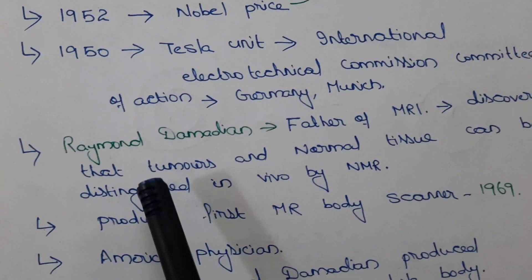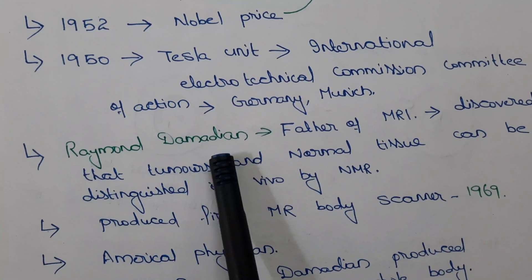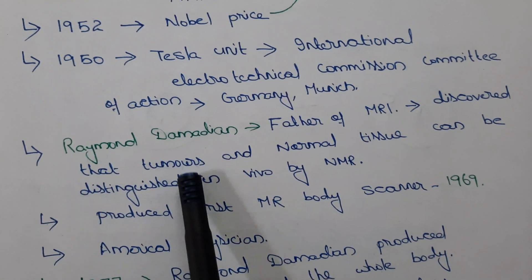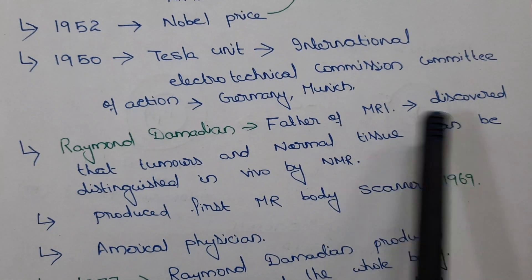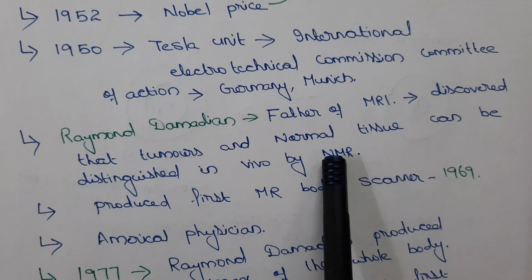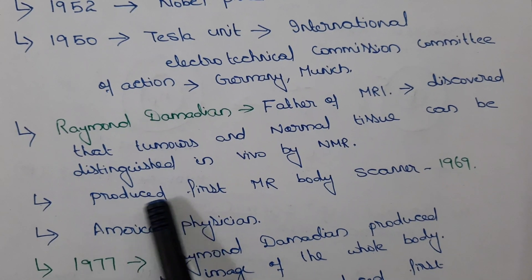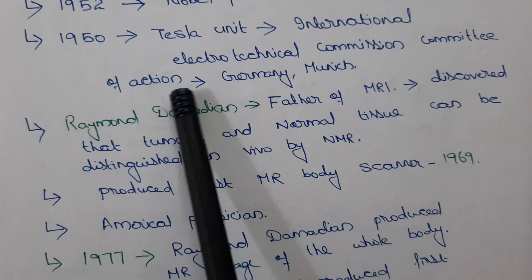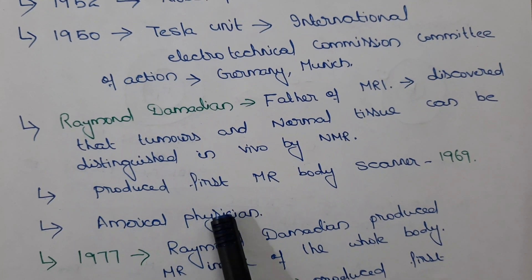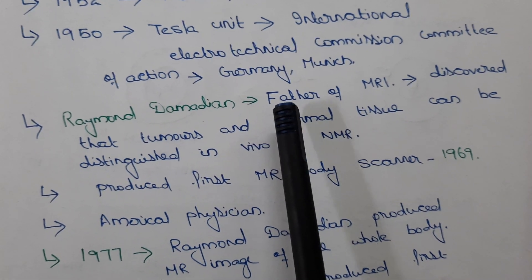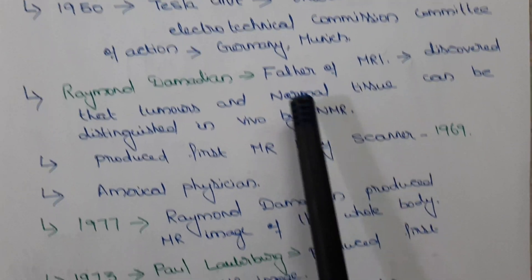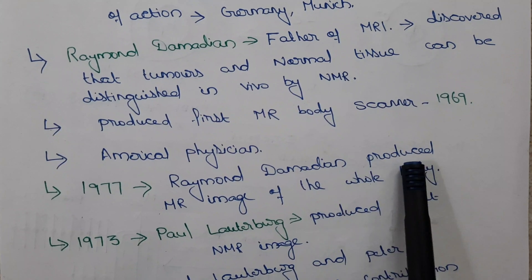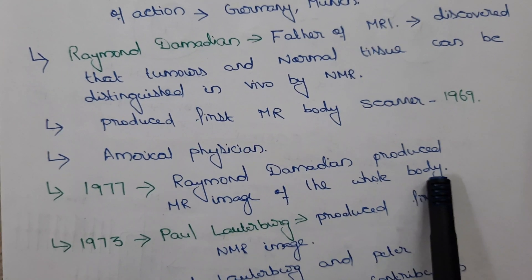Now, Raymond Damadian is known as the father of MRI. He discovered that tumors and normal tissue can be distinguished in vitro by NMR, and he was the one who produced the first MR body scanner in the year 1969. In the year 1977, Raymond Damadian also produced an MR image of the whole body.